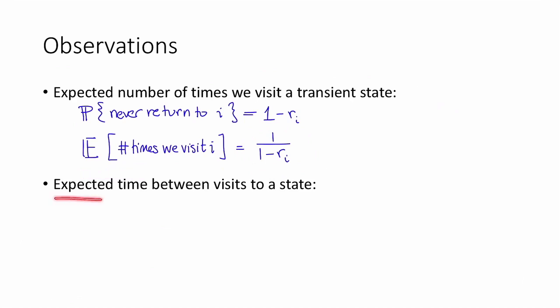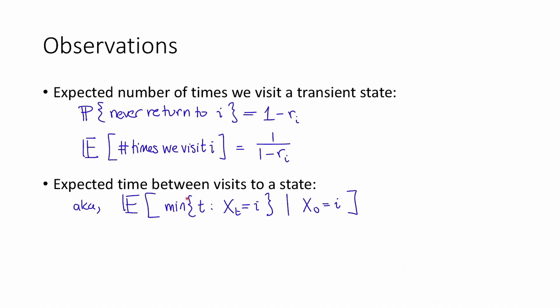It also makes sense to ask about the expected time between visits to a state — that is, the expectation of the minimum t such that x sub t equals i, conditioned on x sub 0 equals i, where we minimize over all t greater than or equal to 1. If the state i is transient, then this expectation is infinity: with some positive probability we leave state i and never come back, so the expected time until we return is infinite.